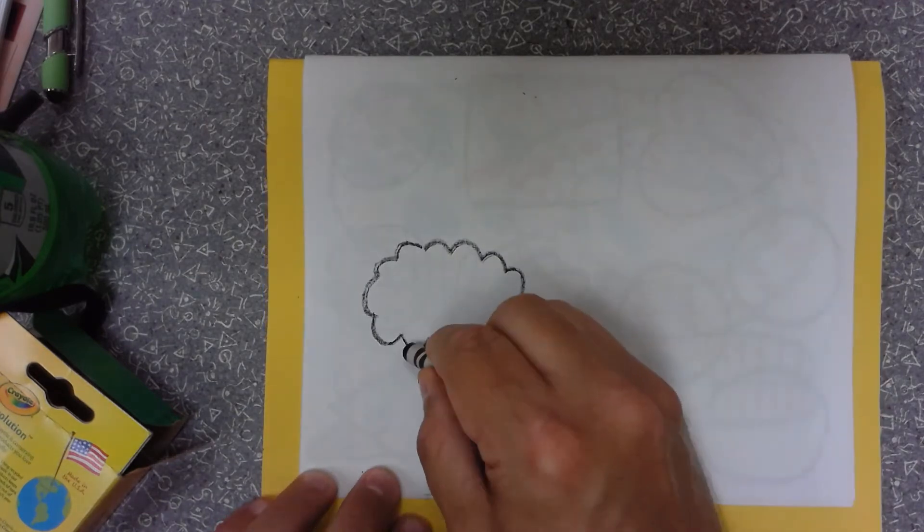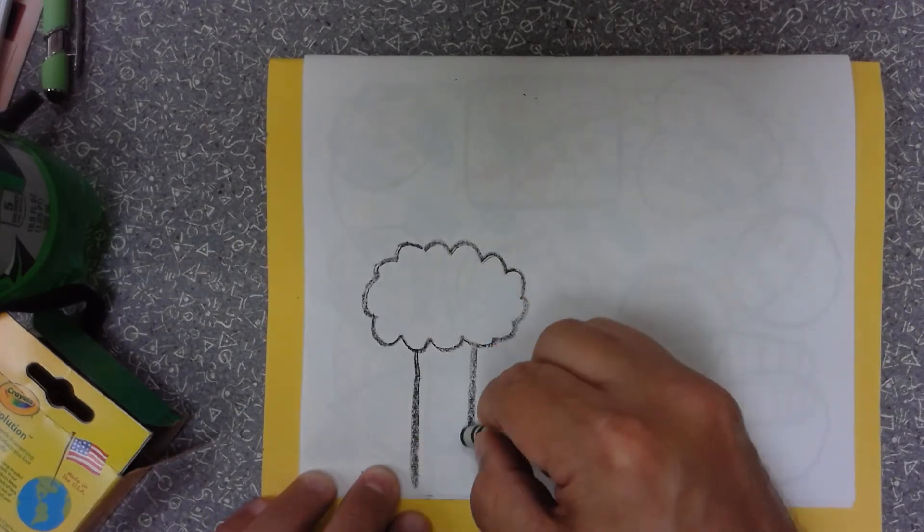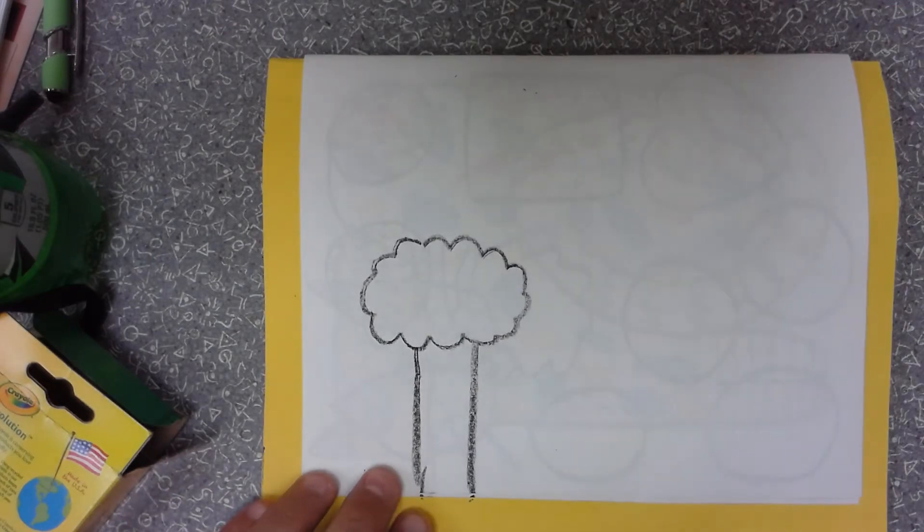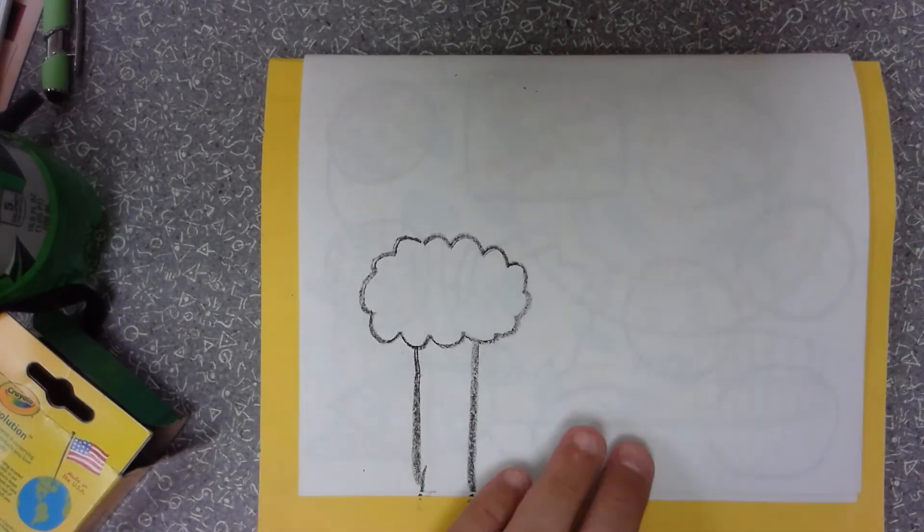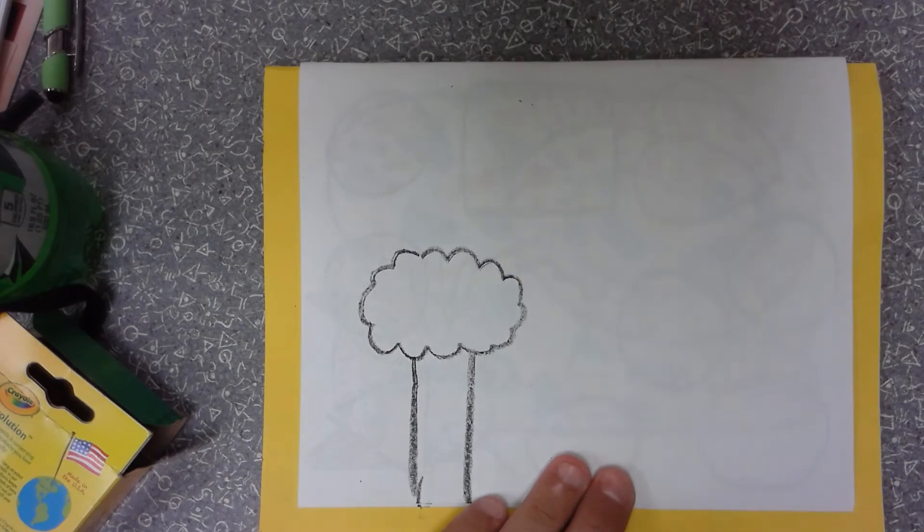Then we're going to make two lines that come down for the tree trunk, all the way down to the bottom of the page. That's our closest tree, that's the big tree, that's the foreground, that's the front.